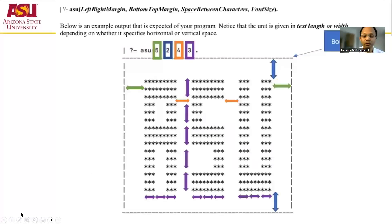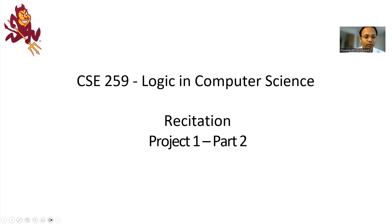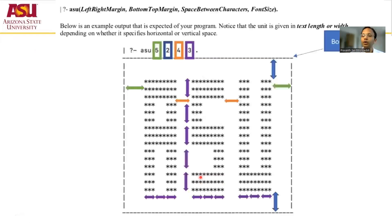Hello and welcome to part two of project one. Hopefully you remember what you did in part one and the description of the project. A quick overview: you're supposed to input a function ASU which takes four numericals. The first numerical is the left and right border, the second is the top and bottom, the third is the spaces between the characters, and the fourth is the font size. Given these, you are supposed to output ASU in a bounding box.